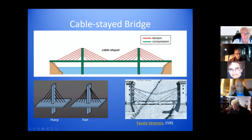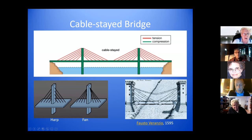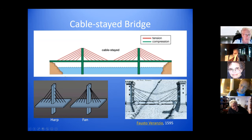The next kind is cable-stayed bridges. These bridges are held up by a tower, and the cables, instead of going all the way to the other tower, go directly to the roadway surface. Each cable is in tension, taking the load of the roadway to the tower. In this type of bridge, the towers carry all the weight. There are two forms for the cables: the harp form, where cables are attached to different places on the tower, or the fan form, where they all attach to the same place.